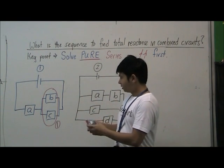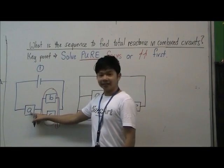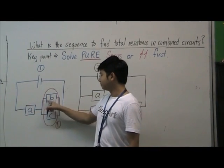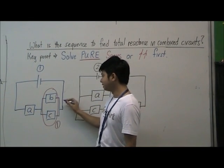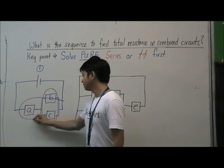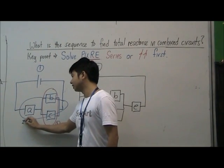Then after this, we see that resistor A is now in pure series with the combined resistance of B and C. This will be our second step, and we will find the total resistance.